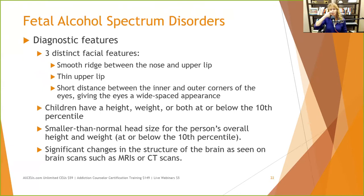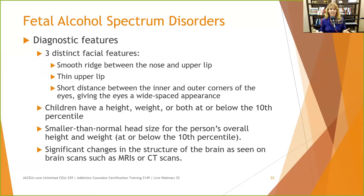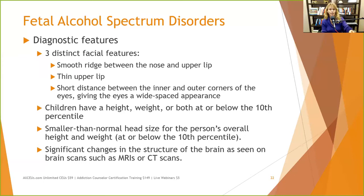Diagnostic features include three distinct facial features: the philtrum — the ridge between nose and upper lip — may be absent; a very thin upper lip; and wide-spaced eyes. You can look these up online, but remember that adults generally grow out of these features, so don't rely on them for adult diagnosis. Even in children, a significant percentage with FASD — especially on the lower end of the spectrum — don't have the facial features.